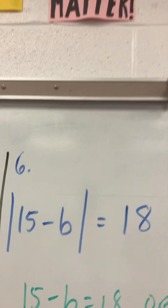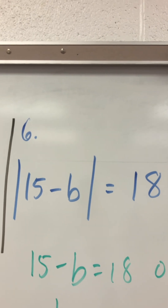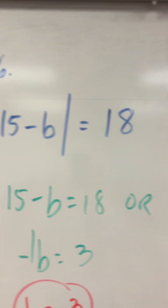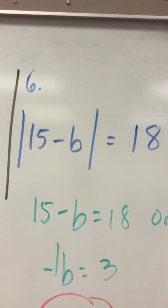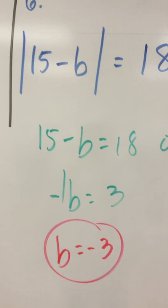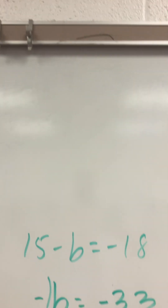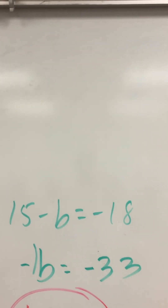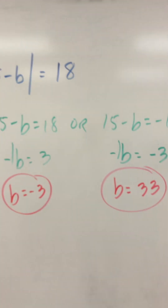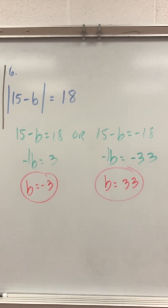Absolute value of 15 minus b equals 18. So 15 minus b equals 18 or 15 minus b equals negative 18. Subtract 15 from both sides, negative b equals 3, divide by negative 1, b equals negative 3. Or subtract 15 from both sides, negative b equals negative 33, divide by negative 1, you get positive 33. Two answers. You've been watching the Weiss channel.